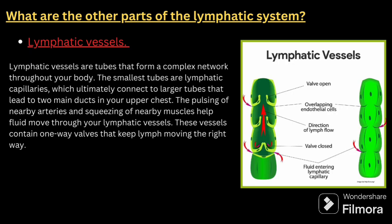Lymphatic vessels are tubes that form a complex network throughout your body. The smallest tubes are lymphatic capillaries, which ultimately connect to larger tubes that lead to two main ducts in your upper chest. The pulsing of nearby arteries and squeezing of nearby muscles help fluid move through your lymphatic vessels. These vessels contain one-way valves that keep lymph moving in the right direction. An image is provided to help you understand the flow and purpose.